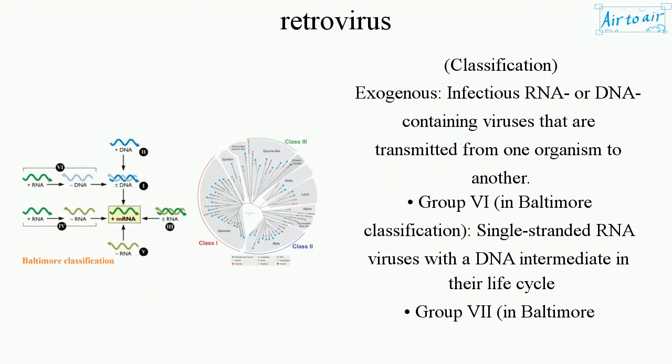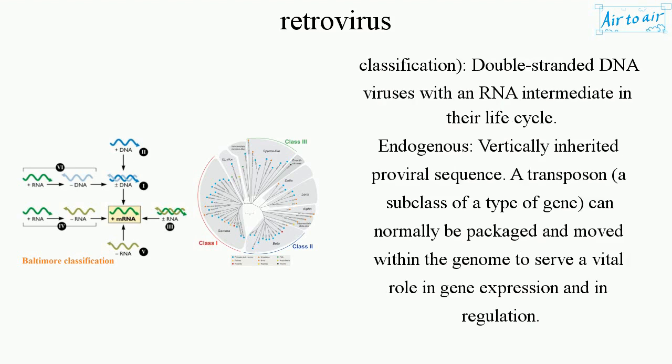Classification. Exogenous: infectious RNA or DNA containing viruses that are transmitted from one organism to another. Group VI in Baltimore classification — single-stranded RNA viruses with a DNA intermediate in their life cycle. Group VII in Baltimore classification — double-stranded DNA viruses with an RNA intermediate in their life cycle.